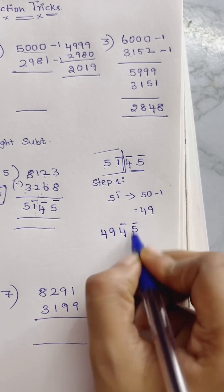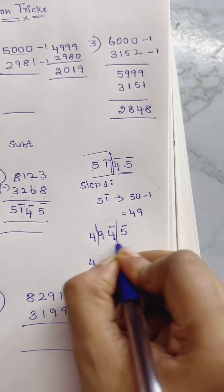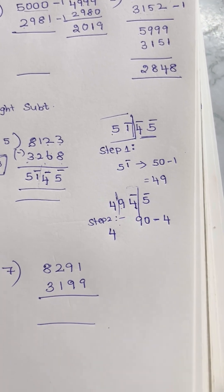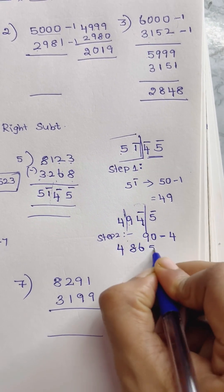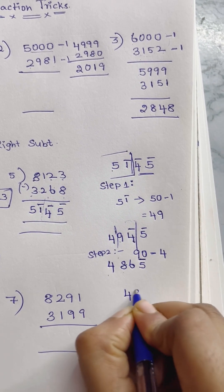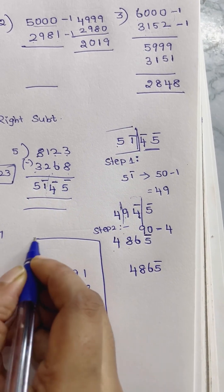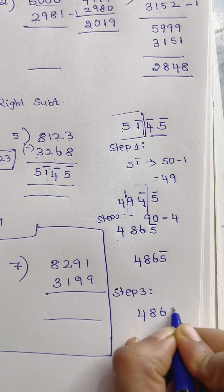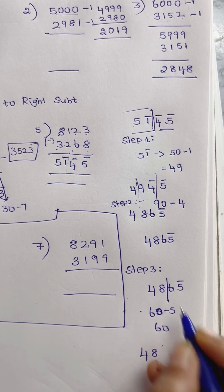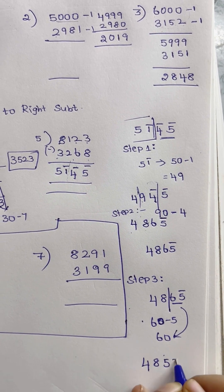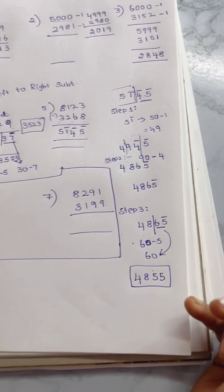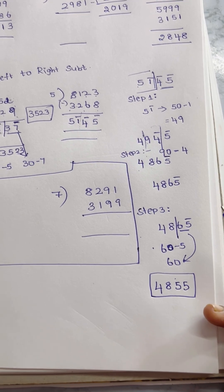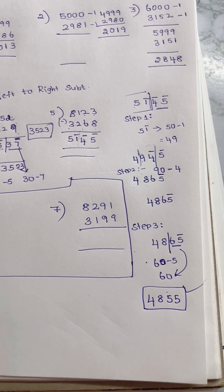The bar is here. We split the number at the bar, so we can split the number — right, so we can split the number into 94. Step 2: what do you do? 94 — 90 is equal to 90, minus 4 bar is equal to 4. 90 minus 4 is equal to 86. Then the balance is equal to 5 bar. So: 4, 8, 6, 5 bar. Next step 3: 4, 8, 6, 5 bar is equal to 65. In the step, 65 minus 5 is equal to 60. 60 minus 5 is equal to 55. Then 4, 8, 5 is the answer.